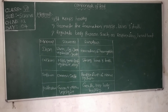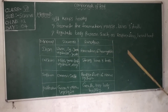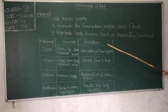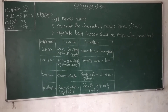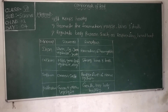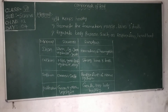The next mineral is calcium. Calcium is found in milk, green leafy vegetables, and ragi. These foods are rich in calcium. The functions of calcium include strengthening bones and teeth, muscle contraction, and clotting of blood.